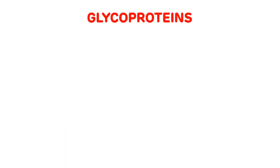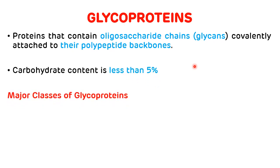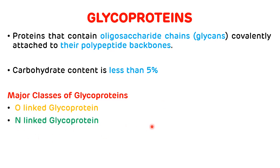First, the definition of glycoproteins. Proteins that contain oligosaccharide chains covalently attached to their polypeptide backbones are called glycoproteins. The carbohydrate content of glycoproteins is less than 5%. There are three major classes of glycoproteins: first, O-linked glycoproteins; second, N-linked glycoproteins; and third, GPI-linked glycoproteins. We will see these major classes in the next slides.